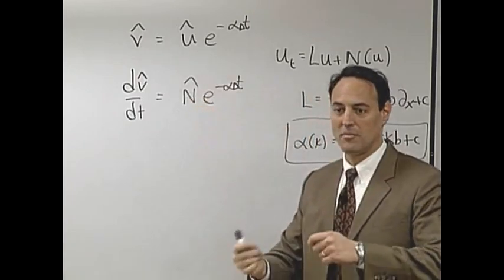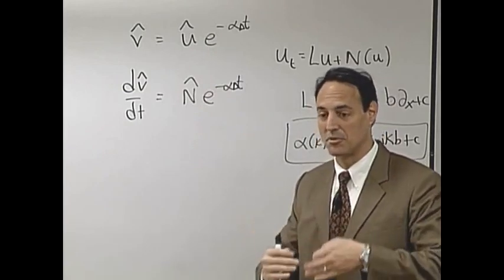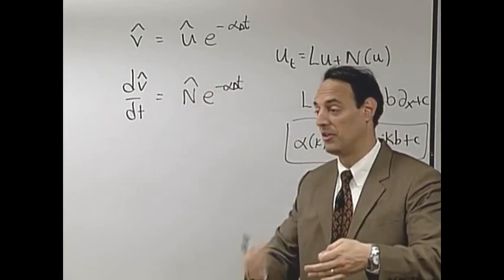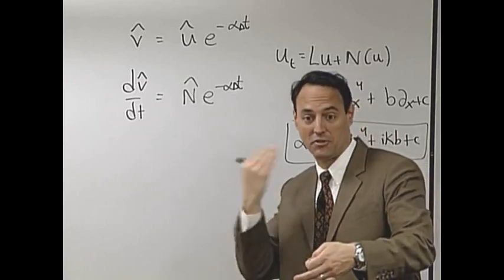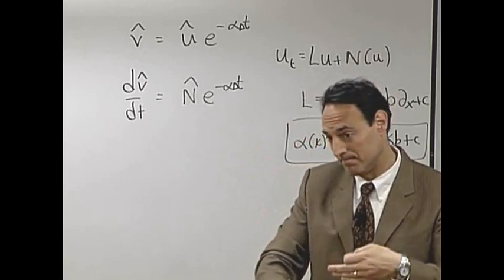Then you go here, you evaluate your nonlinear term, Fourier transform it, multiply, take a step forward. And now you have to make sure which variable you're in. You're now working with the v̂ variable to step in your ODE45, but then you have to come back out to u to get your field to calculate the new nonlinear term, come back in, step forward in v.